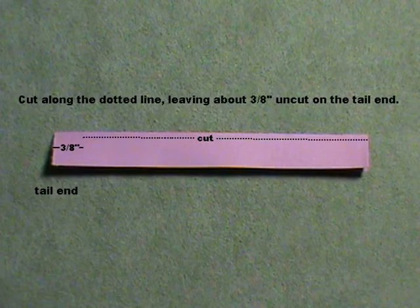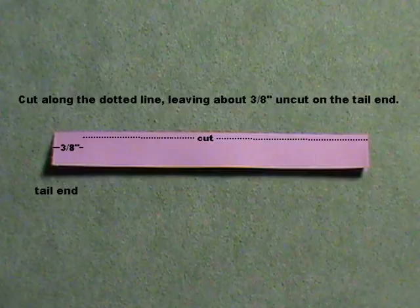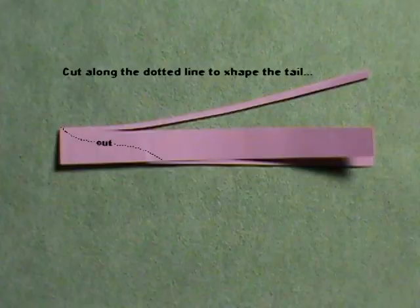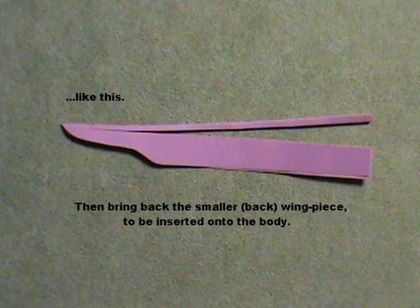Cut along the dotted line leaving about three eighths of an inch uncut on the tail end. Cut along the dotted line to shape the tail. Like this. Then bring back the smaller back wing piece to be inserted onto the body.